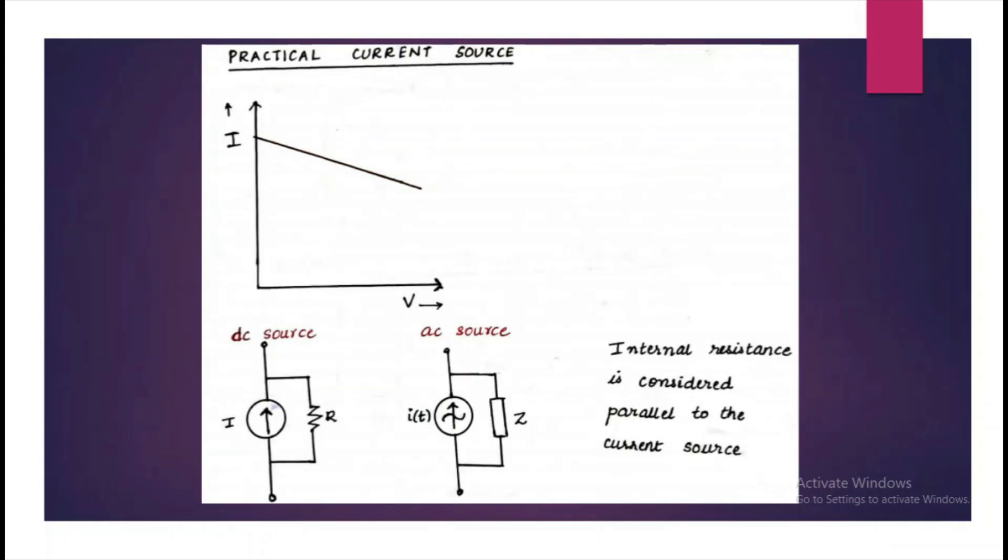Next one is a practical current source. This is the DC source and this is an AC source. For voltage source, the resistance is in series but for current source, it is in parallel.